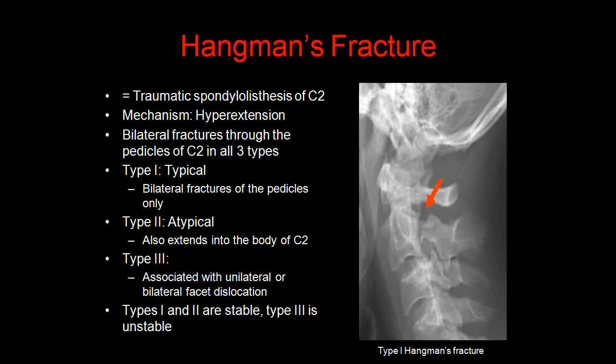A Hangman's fracture is otherwise known as traumatic spondylolisthesis of C2. The mechanism is hyperextension. These are bilateral fractures through the pedicles of C2 in all three types. Type 1 has bilateral fractures of the pedicles only. In type 2, the fracture extends into the body of C2. Type 3 is associated with unilateral or bilateral facet dislocation. Types 1 and 2 tend to be stable, and type 3 is unstable. Any suspected fracture on plain radiograph requires a CT scan.